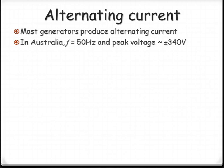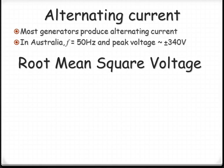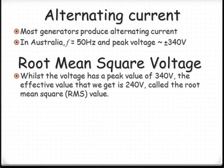The answer is that we actually talk about what we call a root mean square value. So whilst it has a peak value of 340 volts, really the effective value that we get is only about 240 volts. Anytime you see V_RMS or I_RMS or P_RMS, it's about the effective voltage that we're actually getting, not the peak voltage.